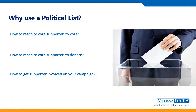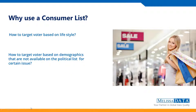Now that we have talked about our political list, let's move on to our consumer list. If we need to more specifically tailor our campaign towards data points not in our political mailing list, we can use this consumer mailing list. It has things such as profession, language, generations in the household, number of children, and whether a person supports environmentalist causes.